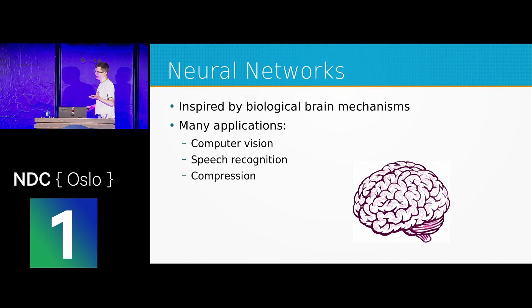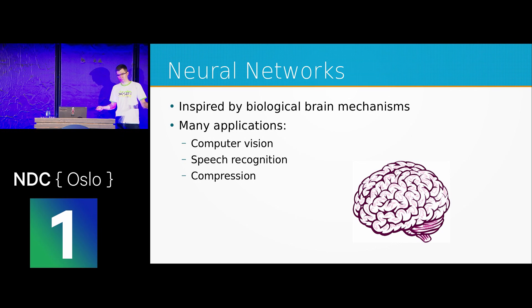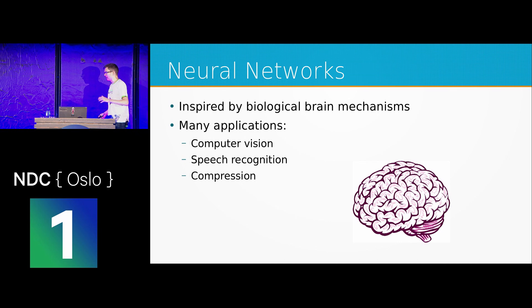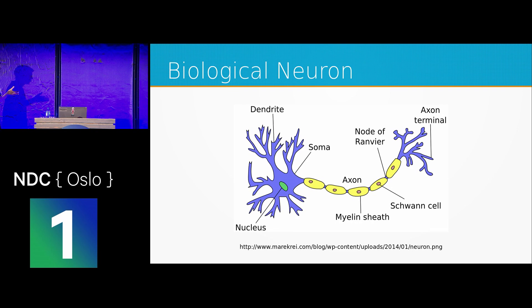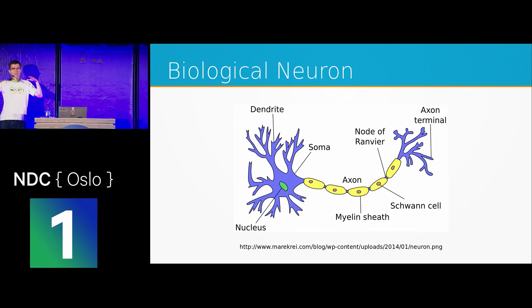One of the biggest families of algorithms in machine learning are neural networks, with a vast number of applications from computer vision to data compression and many more. They were inspired by our biological brain mechanism. In our neurons, electrical signals from different neurons travel through dendrites to the neuron cell, where they are summed up. If the sum is bigger than a given threshold, it fires through a single axon — the output — which then connects to different neurons.